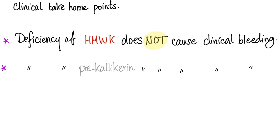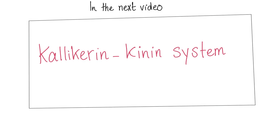Clinical take-home point: deficiency of high molecular weight kininogen is not clinically significant — it does not cause bleeding. Also, deficiency of prekallikrein does not cause bleeding and is not clinically significant. Can you figure out why? In the next video, we'll talk about the kallikrein-kinin system and why you get dry cough and angioedema when you take ACE inhibitors — any drug ending in 'pril', such as enalapril or lisinopril.